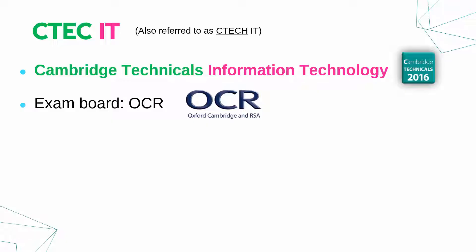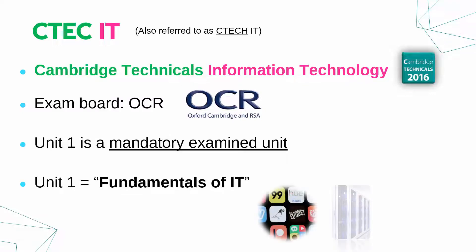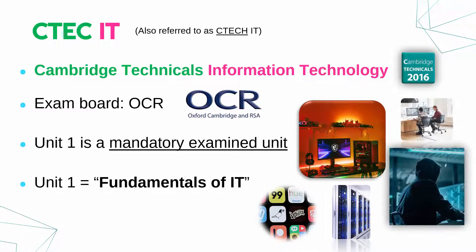CTECH is quite versatile — there are a few different variants — but there is one unit which every single person will do, called unit 1. It is one of the mandatory units, which means everyone has to do it, and it's an examined unit, meaning you sit in an exam hall, do the paper, and it's sent off and marked by OCR examiners. The other units are internal coursework units. The proper name for unit 1 is Fundamentals of IT — a broad scatter of important IT topics in fair but not exhaustive detail.